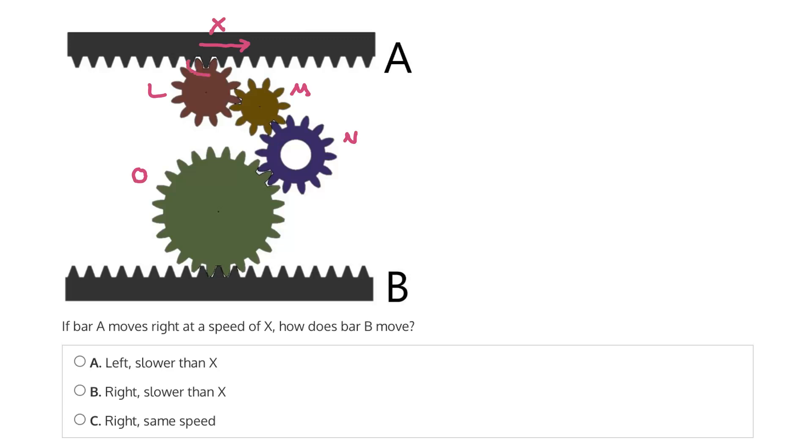So we can see that gear L and bar A are directly meshed, and if bar A is moving to the right, then we know that gear L will be rotating clockwise. We also know, as a consequence of them being directly meshed, that they will have the same tangential velocity. So in this case, that tangential velocity will point in this direction, parallel with the movement of bar A, and it will be equal to X.